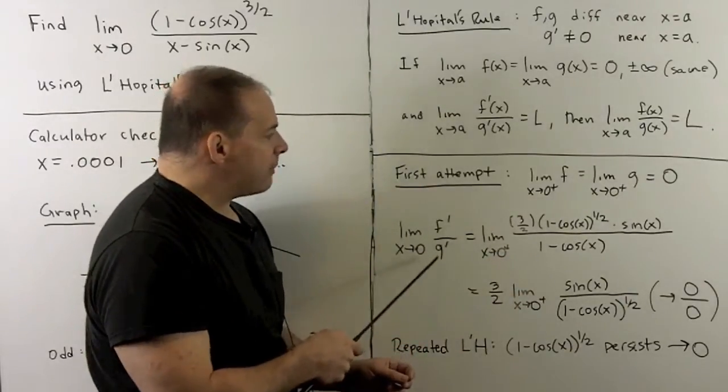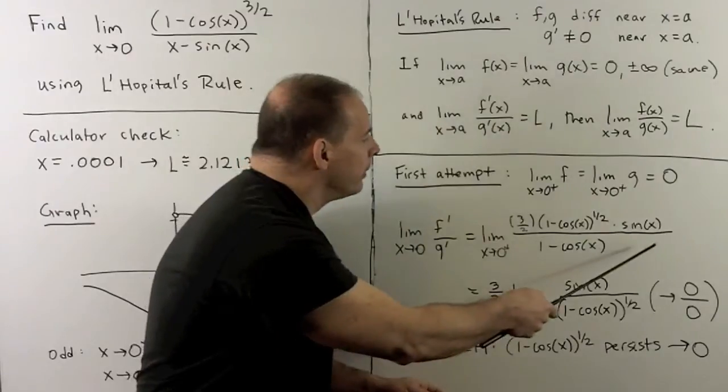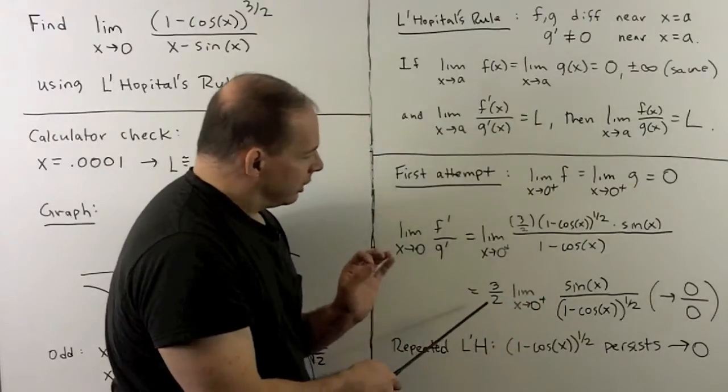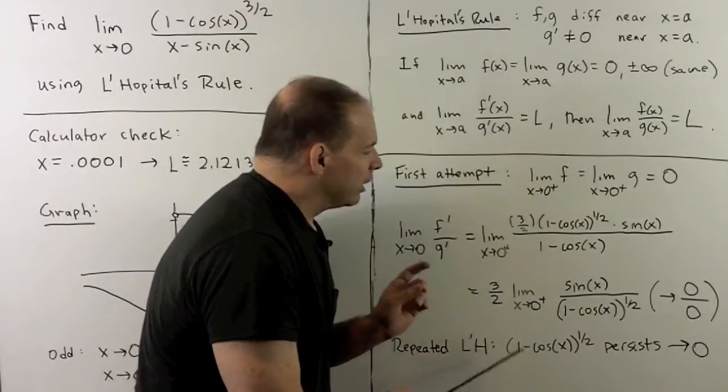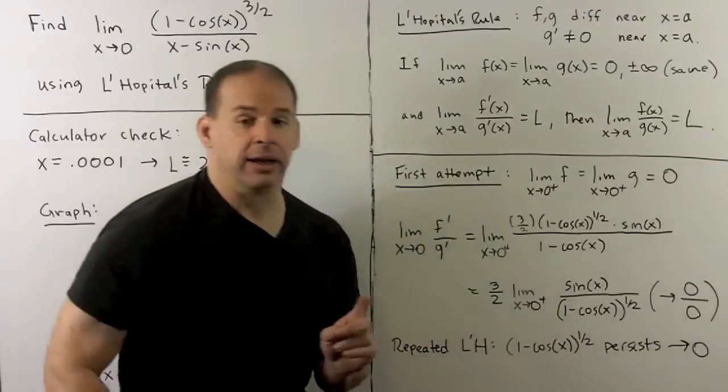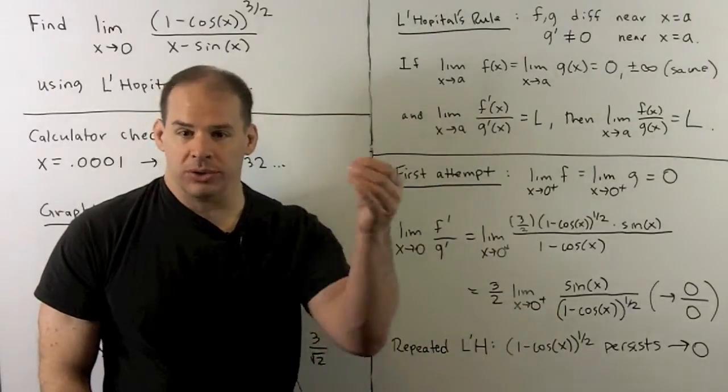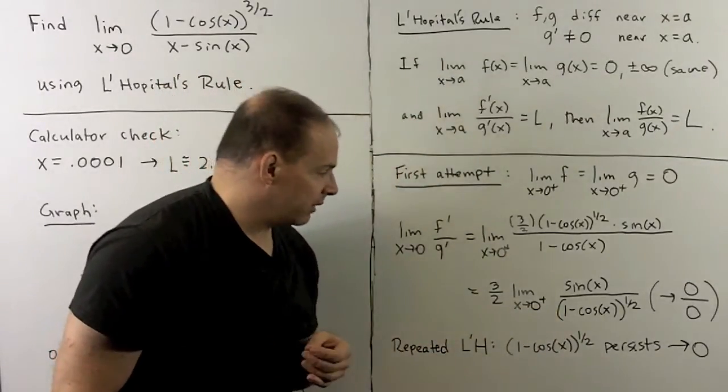We take derivatives of numerator and denominator, we work that out. Then we see we're going to be in a situation where we can apply L'Hôpital's rule again. We're going to get a zero over zero when we do the derivatives, after we simplify.